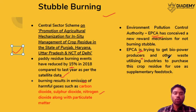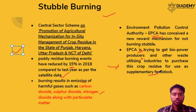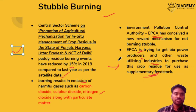Stubble burning produces carbon dioxide, sulfur, SOx, NOx, and particulate matter. The EPCA (Environment Pollution Control Authority), established by a Supreme Court judgment, is also involved in this context, working to get bio-power producers who use crop residue as feedstock for certain industries.